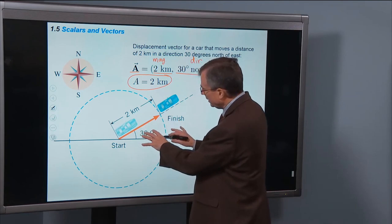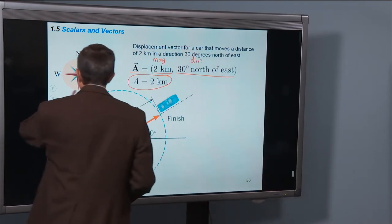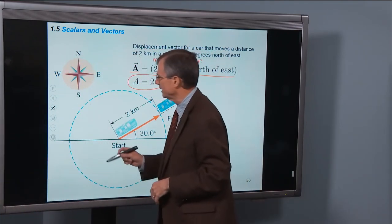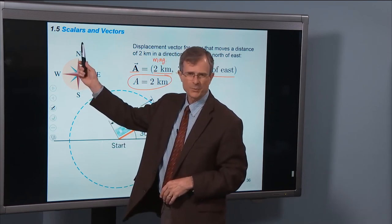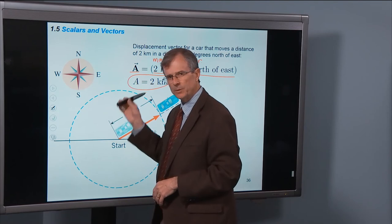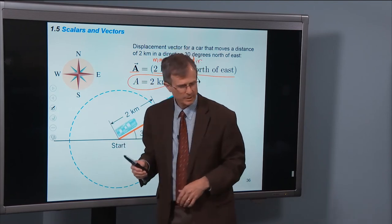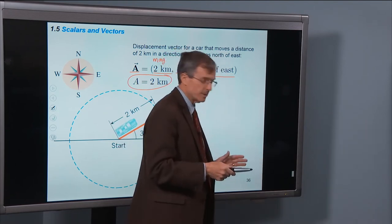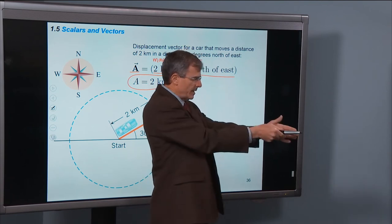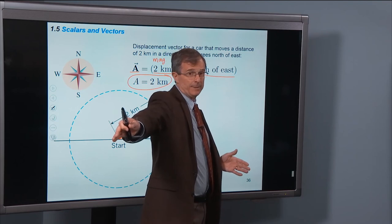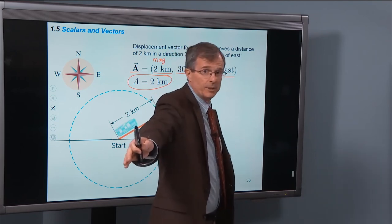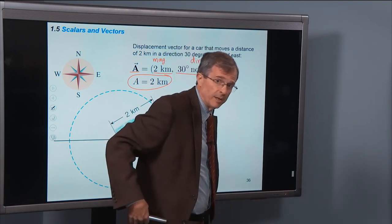So graphically here, if we have north, south, east, and west, and we'll use this a lot, if north is up the screen in this way, then east will always be toward the right. So if you're facing north, in this particular room, north is in this direction. If I'm facing north, then east will be on my right hand side. And west will be on my left side, and south will be behind me.